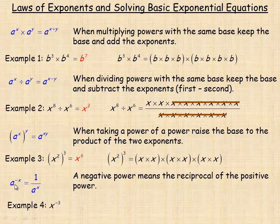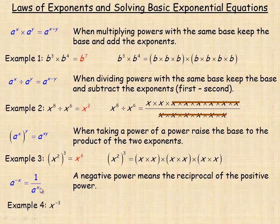The last law on this page deals with a negative exponent: a to the negative x is defined as one over a to the x. A negative power means the reciprocal of the equivalent positive power — so a to the negative x equals one over a to the positive x, where x in the denominator has a positive exponent.